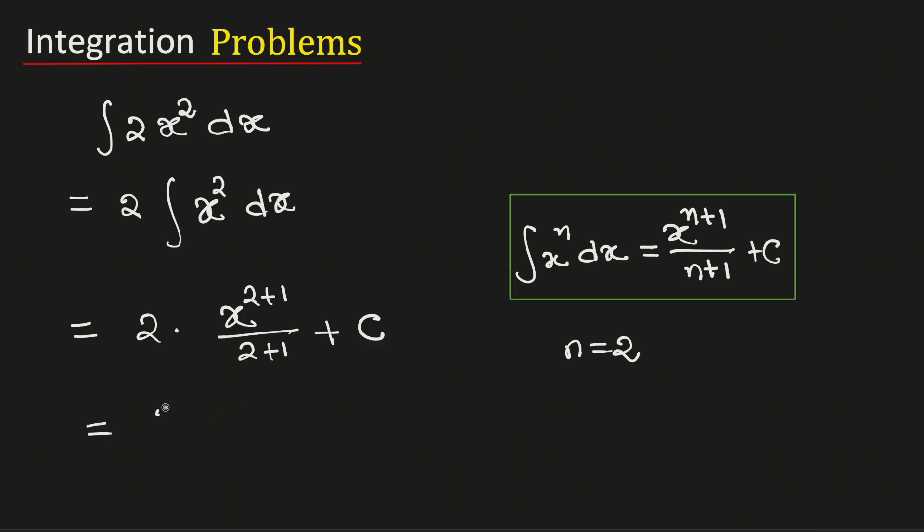Simplifying we get 2 by 3 times x cube plus integration constant C.